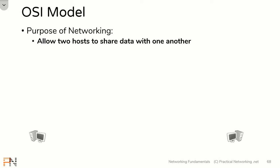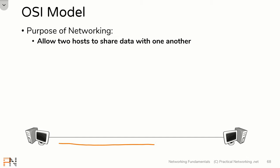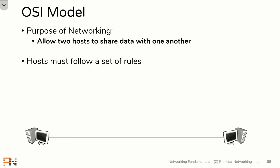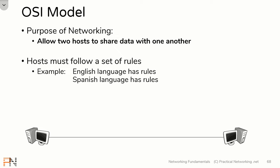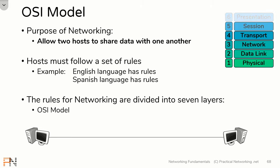The overall purpose of networking as an industry is to allow two hosts to share data with one another. Before networking, if I wanted to get data from one host to another, I'd have to physically walk it over. Networking allows us to automate all that by allowing hosts to share data automatically across the wire. For these hosts to do this, they must follow a set of rules — no different than any language. The rules for networking are divided into seven different layers, and those layers are known as the OSI model.